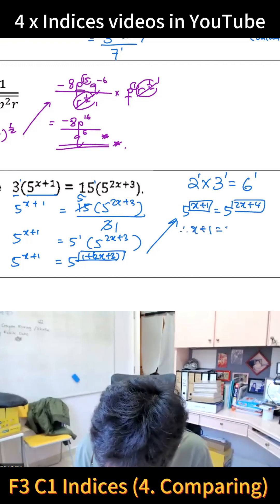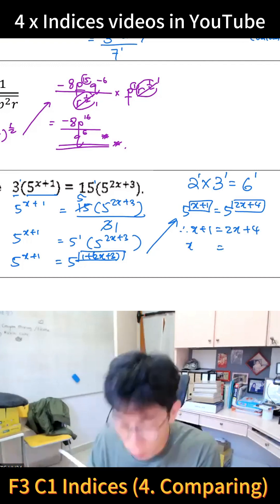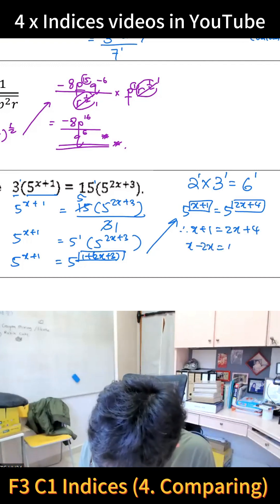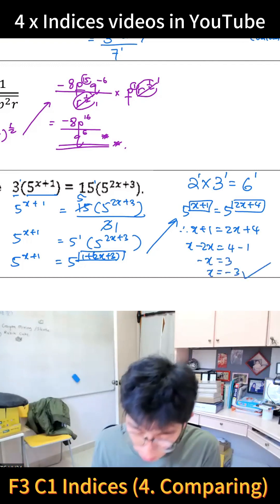Then you can do your move here and there. You bring the 2x over, you get minus 2x. You bring the plus 1 over, you get minus 1. So minus x equals 3, x equals minus 3. That's how you do it.